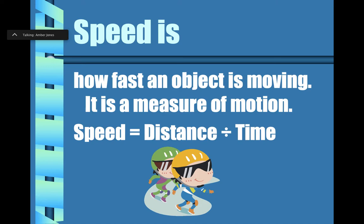In order to calculate the speed, you need to take the distance an object traveled and divide it by the time it took to travel from the starting place to the stopping place.